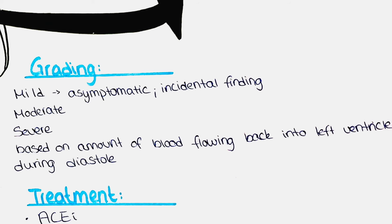How can we grade aortic regurgitation? Mild aortic regurgitation is the least severe form and is usually asymptomatic. It may be detected during a routine physical examination or echocardiogram. Moderate aortic regurgitation can cause symptoms such as shortness of breath, fatigue, and palpitations, and may also cause the heart to enlarge and blood pressure to rise.